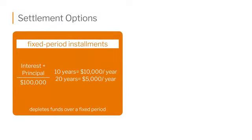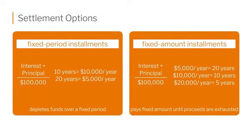There are two additional settlement options: one is a fixed period of time, the other is a fixed dollar amount. Whenever you have this kind of payout where something is fixed — either the number of years or the dollar amount — remember that the person receiving these payouts could outlive those payments, because they're set up for a specific period of time or a specific dollar amount. Once the money is paid out or the years have passed, it's done.